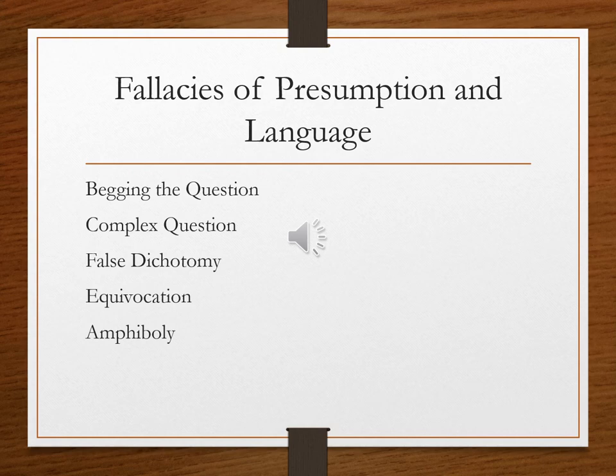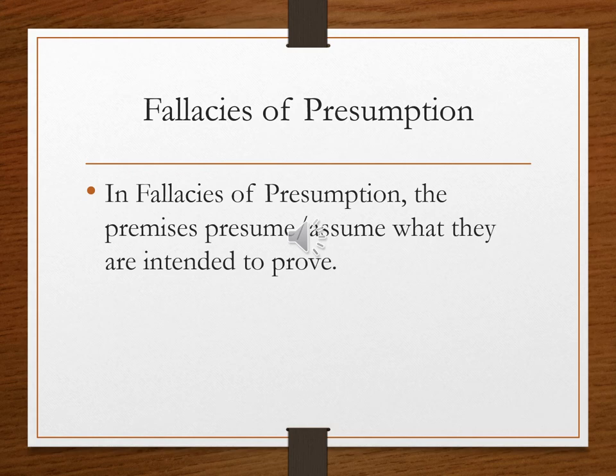Let's get started with the fallacies of presumption. When we presume something, we're making an assumption, and that doesn't mean our assumption is legitimate. In the fallacies of presumption, we're assuming our conclusion is true, or assuming our conclusion is supported by evidence when in fact it isn't. The key thing to keep in mind is that the fallacies of presumption aren't really legitimate arguments because they're not presenting any legitimate evidence for a conclusion — they assume the conclusion is true from the beginning.